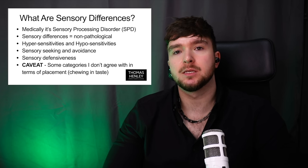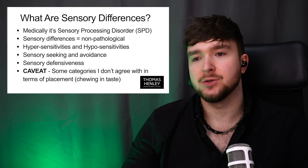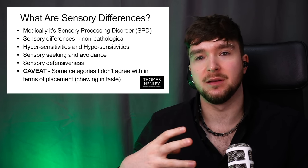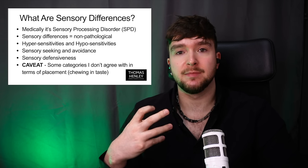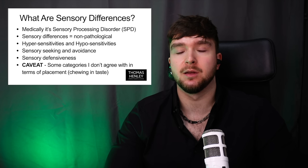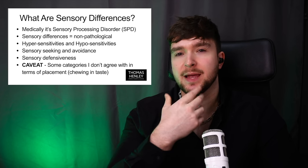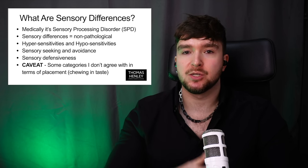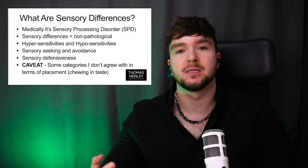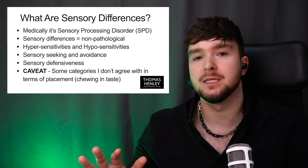I want to put a caveat here because some categories I don't particularly agree with in terms of placement. People's sensory world is very complicated, and quite often it's not just one sense engaged. For example, oromotor stimulation — that sense of chewing — a lot of autistic people need a lot of input in. Some people relate that to taste, which I don't agree with. The actual mechanical tension of your muscles is what's being worked in the oromotor case, rather than just tasting something.